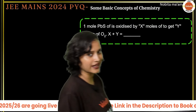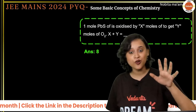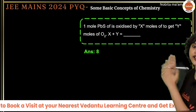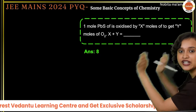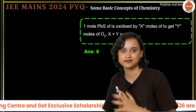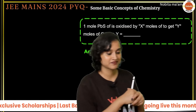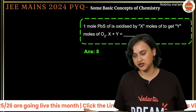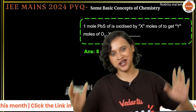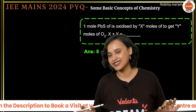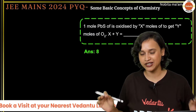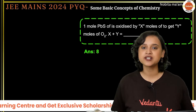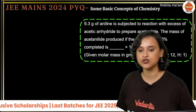The answer is 8 — correct! You are getting a hang of it. These are JEE Mains 2024 questions. The level might go slightly tougher or easier, but this is the usual standard. Just study, practice, and you are guaranteed to get good marks.